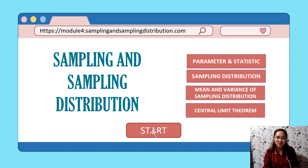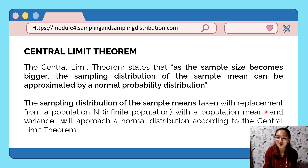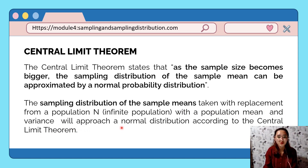The Central Limit Theorem states that as the sample size becomes bigger, the sampling distribution of the sample mean can be approximated by a normal probability distribution. The sampling distribution of the sample means taken with replacement from a population — that is, an infinite population — with a population mean and variance will approach a normal distribution according to the Central Limit Theorem.